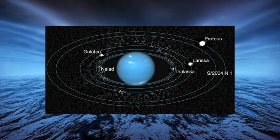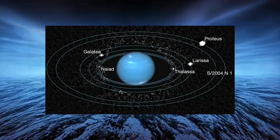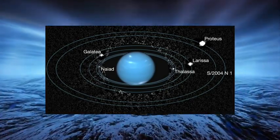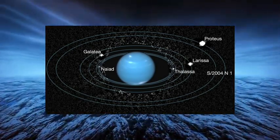There are at least five rings around Neptune, and their names are Galle, Leverrier, Lassell, Arago, and Adams.